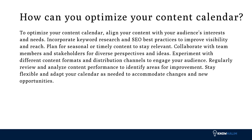How can you optimize your content calendar? To optimize your content calendar, align your content with your audience's interests and needs. Incorporate keyword research and SEO best practices to improve visibility and reach. Plan for seasonal or timely content to stay relevant. Collaborate with team members and stakeholders for diverse perspectives and ideas. Experiment with different content formats and distribution channels to engage your audience. Regularly review and analyze content performance to identify areas for improvement. Stay flexible and adapt your calendar as needed to accommodate changes and new opportunities.